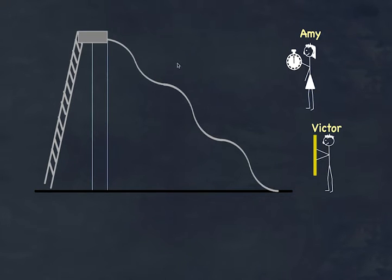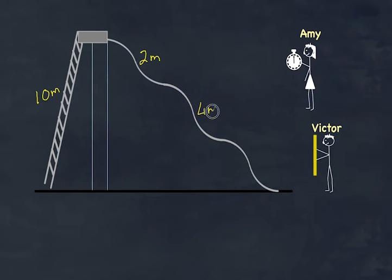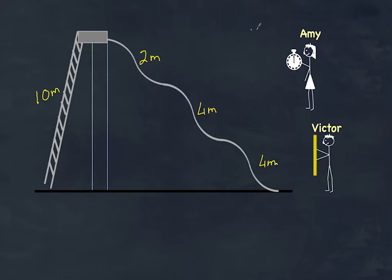Victor discovers something else — the three drops must add up to the total height gained. For example, if the platform is 10 meters high and one drop is 2 meters and another is 4 meters, the third must be the remaining 4 meters. In other words, the individual drops must add up to the total gain — the up must equal the down.